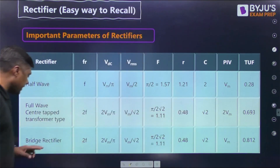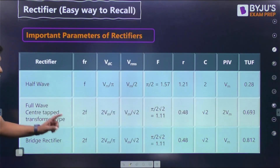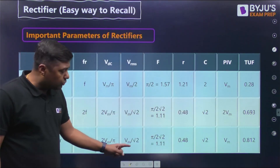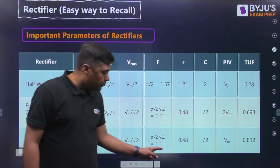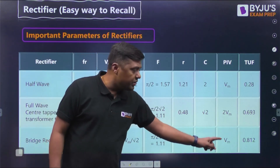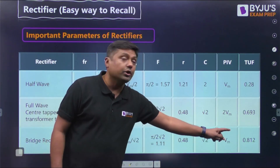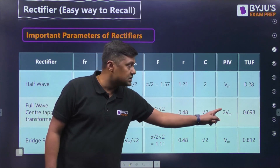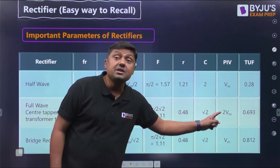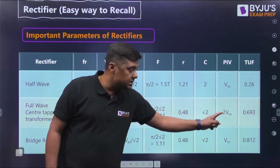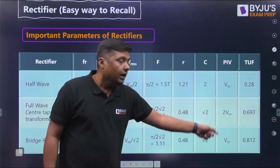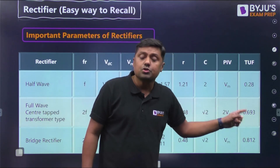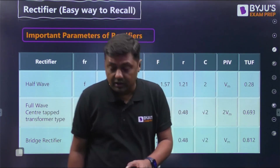For the bridge rectifier: ripple frequency = 2F; VDC = 2Vm/π; VRMS = Vm/√2; form factor = 1.11; ripple factor = 0.48; crest factor = √2; PIV = Vm; and TUF = 0.812. The key difference from the center tapped type is the PIV — it is half — and the transformer utilization factor is highest for the bridge rectifier.